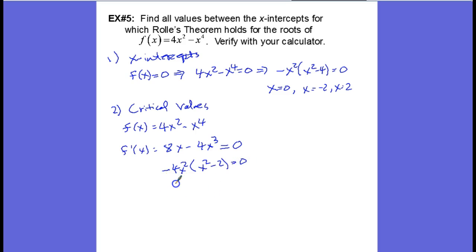And by the zero product law we have x = 0 and we also have x = ±√2. So these are our critical values.